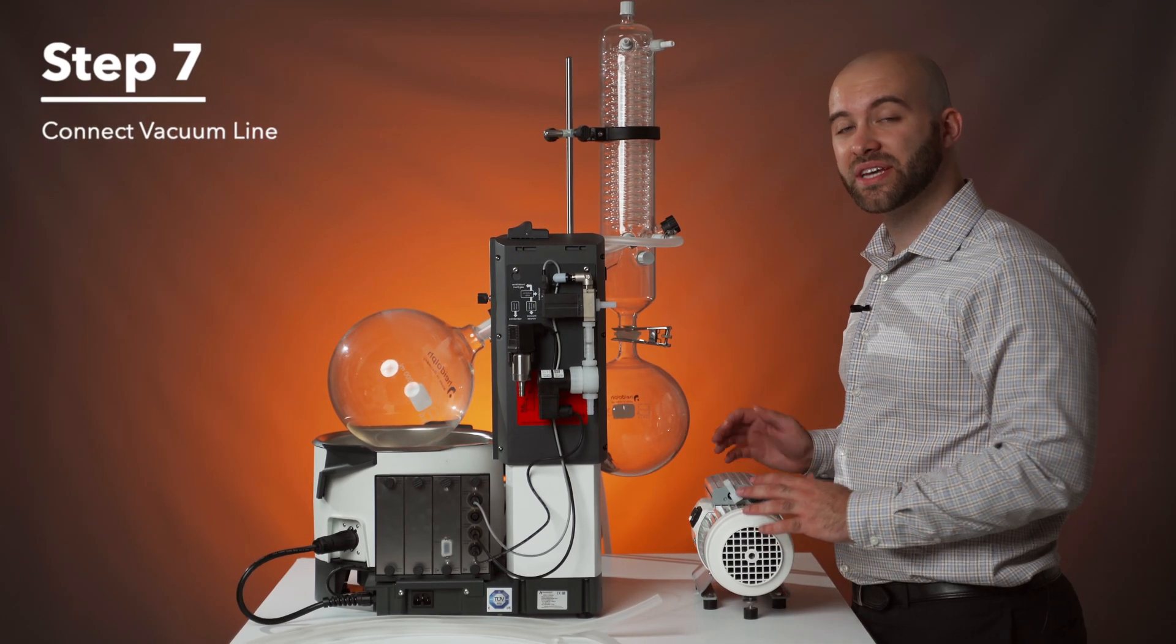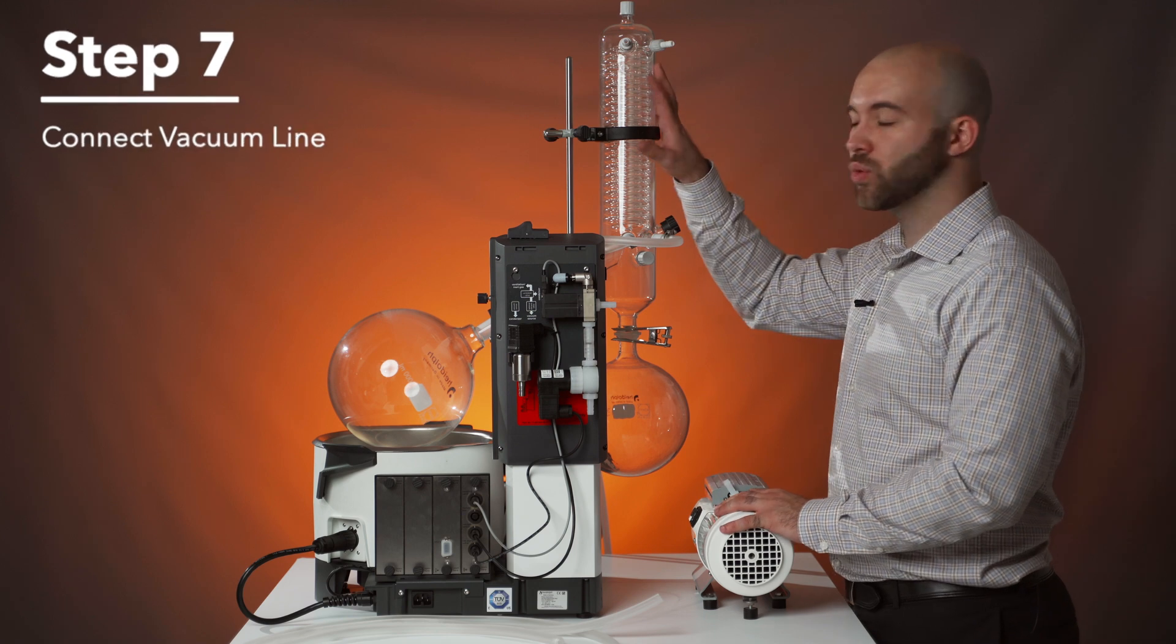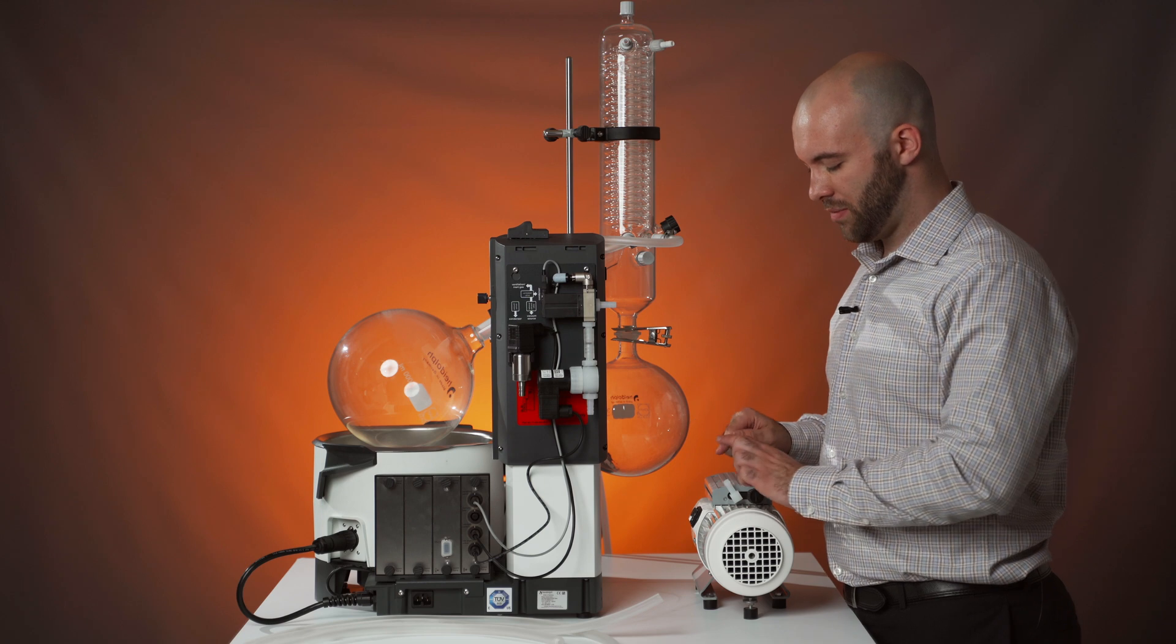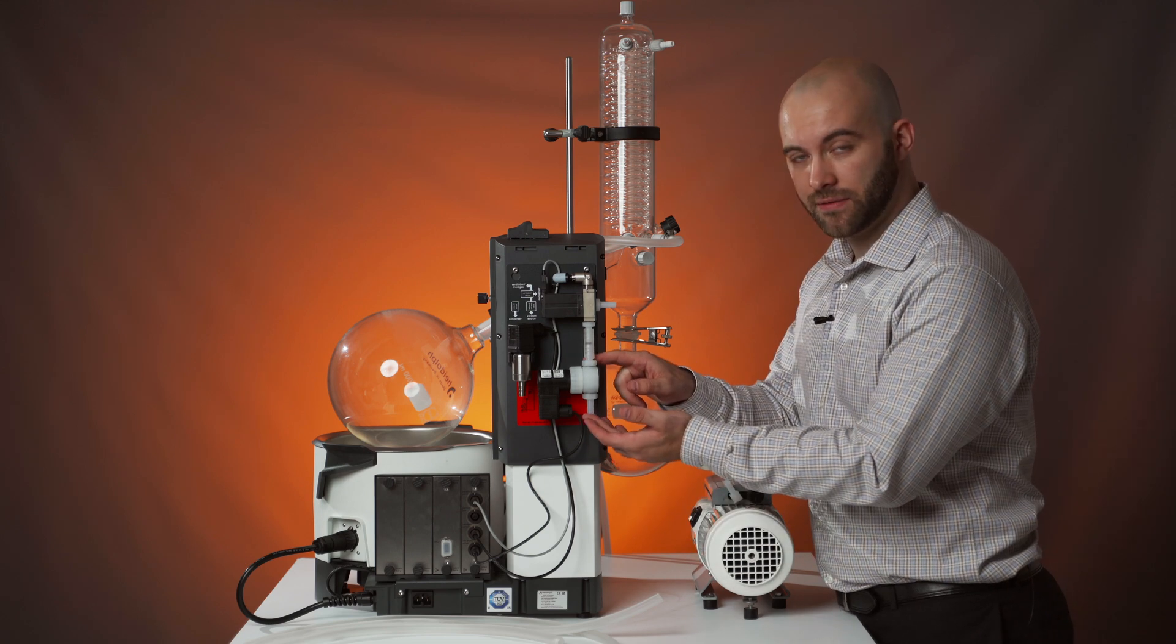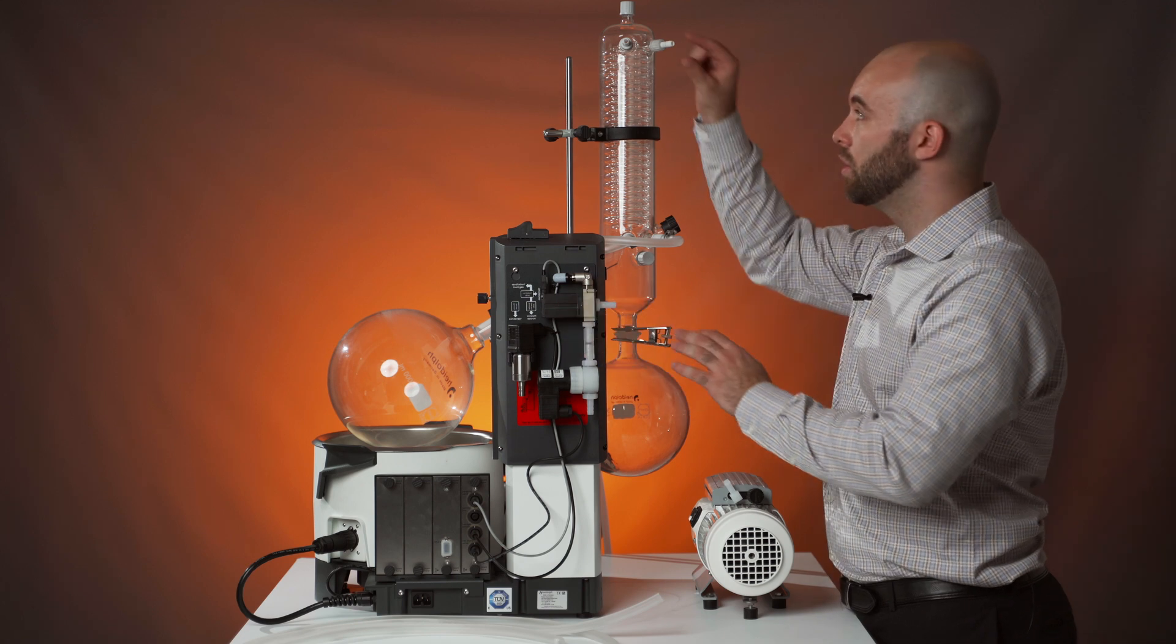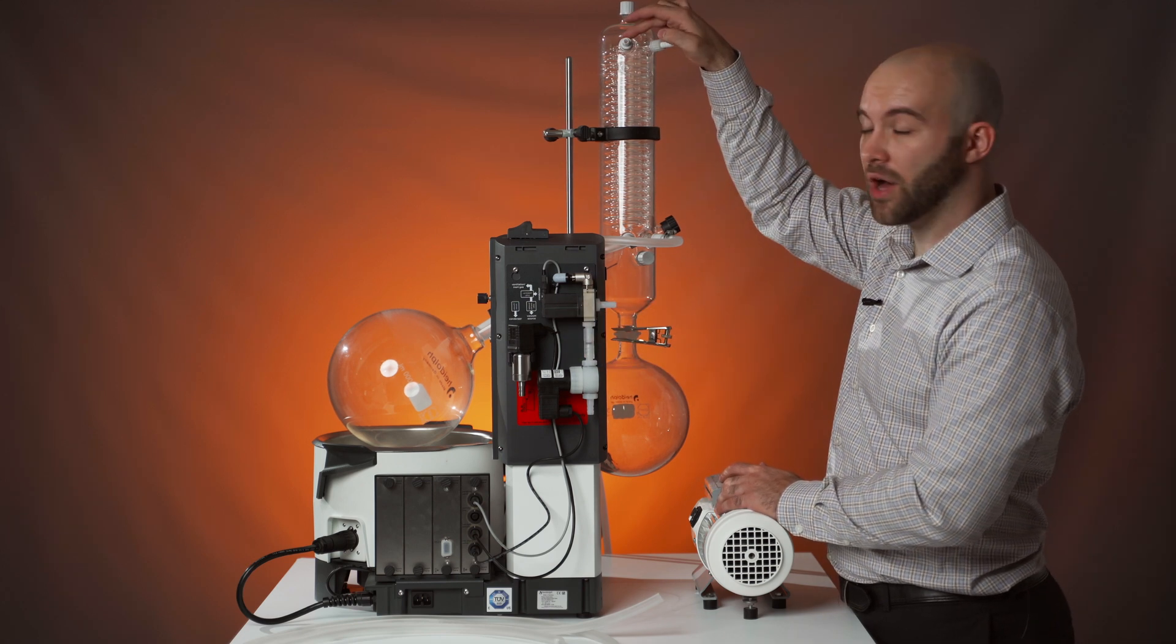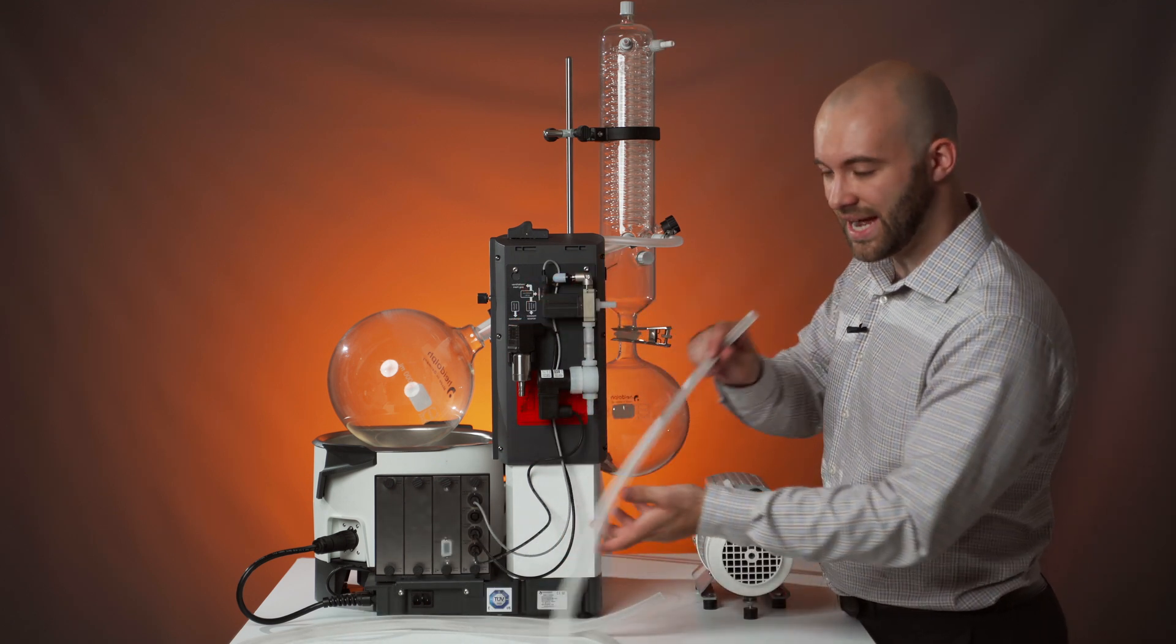Step seven, we'll be connecting our vacuum line from our Rotovac ValveTec to our HiVap condenser. We're first going to start by cutting out three pieces of tubing that will match the length from your Rotovac ValveTec to your vacuum valve, from your aeration valve to your condenser, one of these two ports up here, and from the other port to your vacuum sensor. Once you have cut those, you can start attaching.